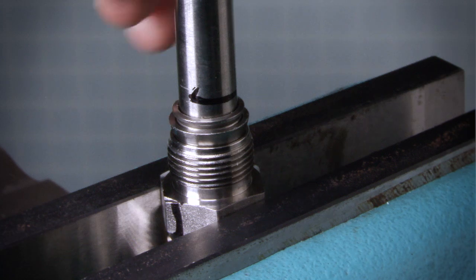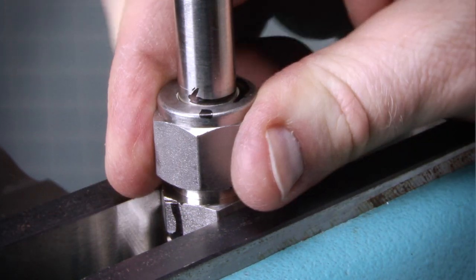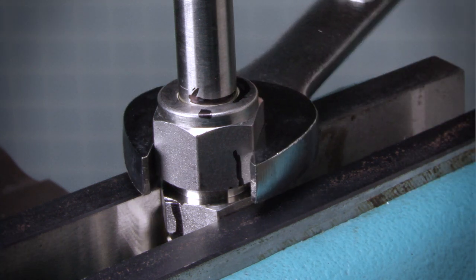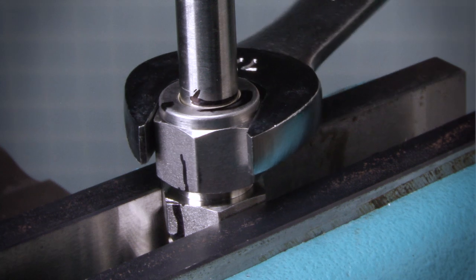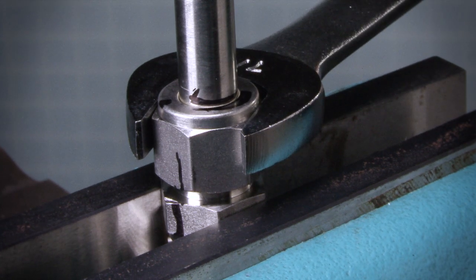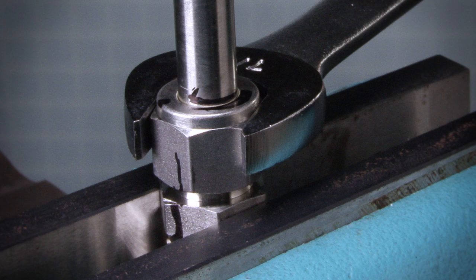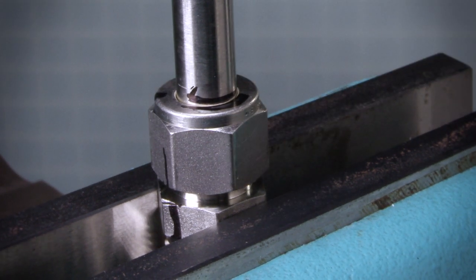Insert the tube with pre-swaged ferrules into the fitting until the front ferrule seats against the fitting body. While holding the fitting body steady, rotate the nut with a wrench to the previously pulled up position, as indicated by the marks on the tube and flats. At this point, you will feel significant increase in the resistance. Tighten the nut slightly.